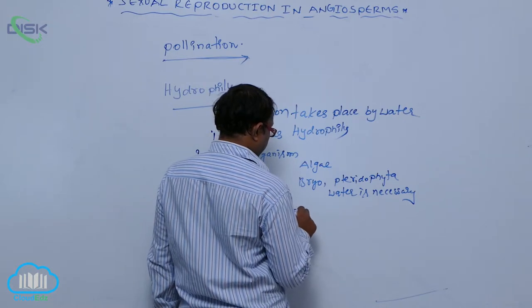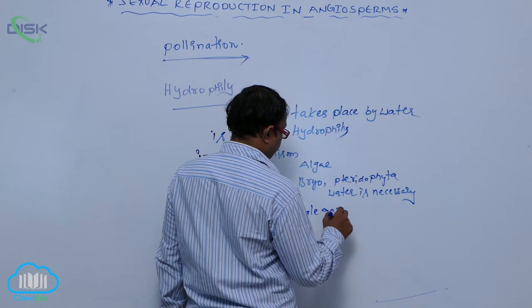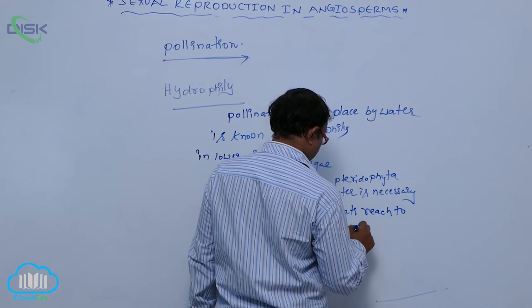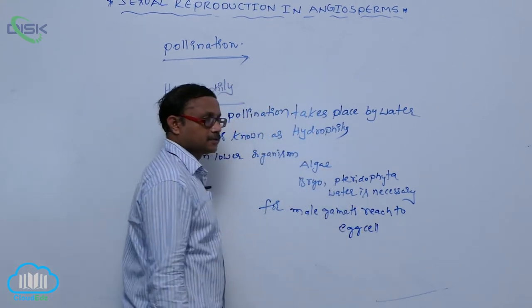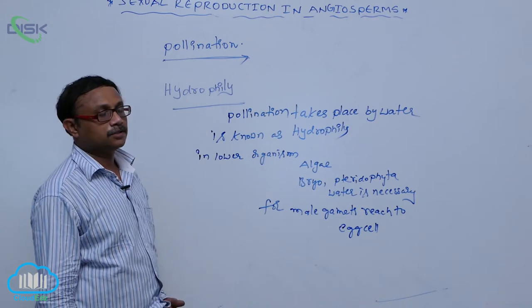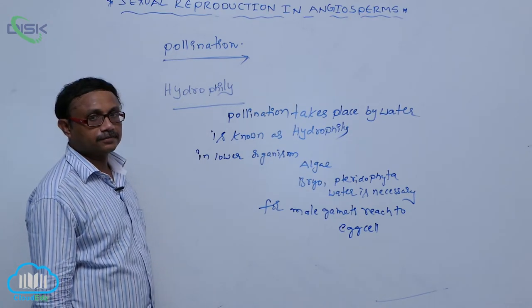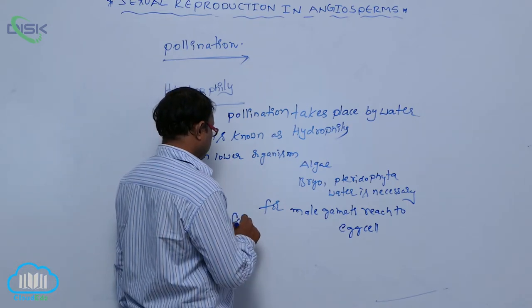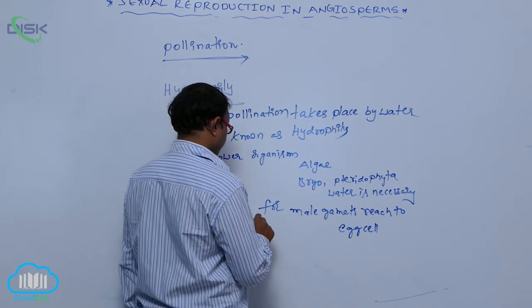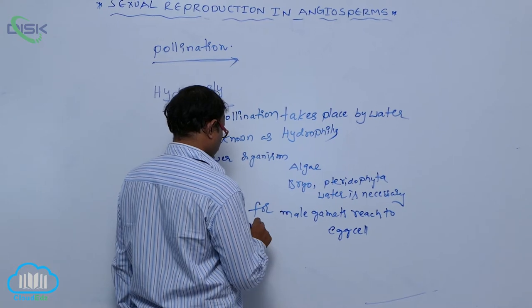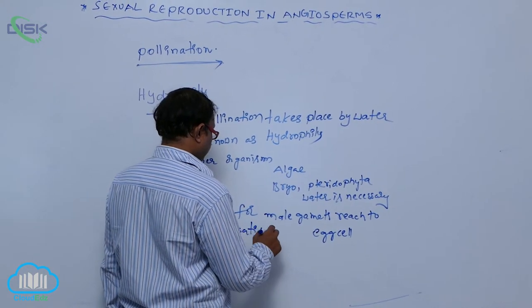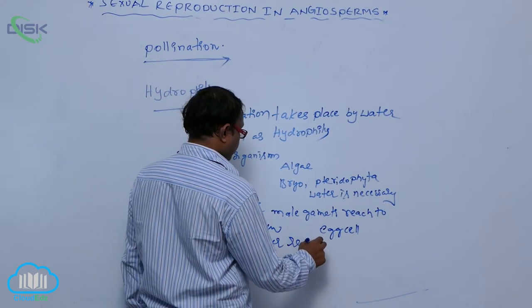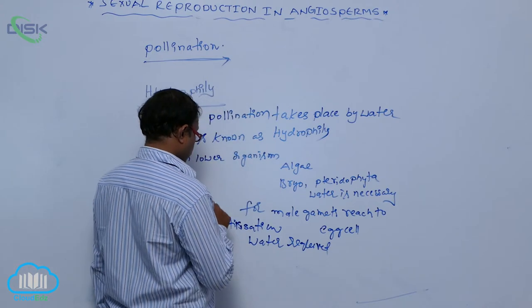For male gametes to reach female gametes in bryophytes and pteridophytes, water is necessary for fertilization. That is why they are less distributed.